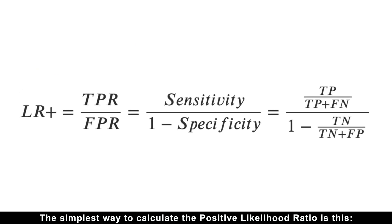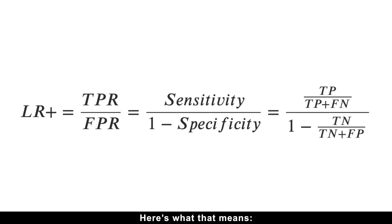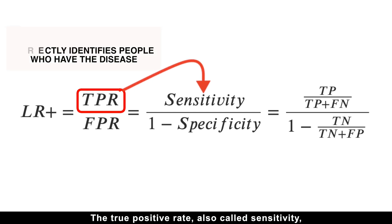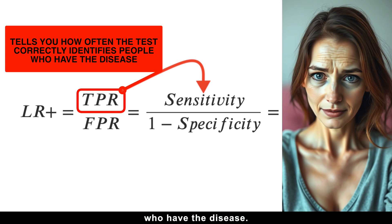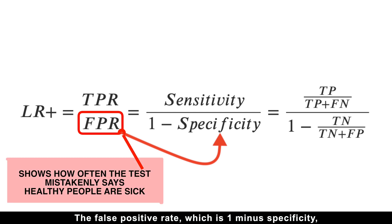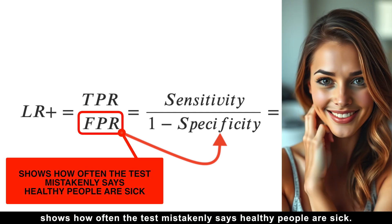The simplest way to calculate the positive likelihood ratio is this: it's the true positive rate divided by the false positive rate. The true positive rate, also called sensitivity, tells you how often the test correctly identifies people who have the disease.